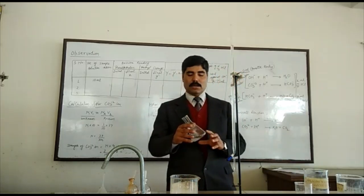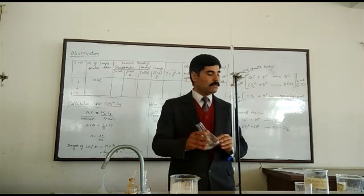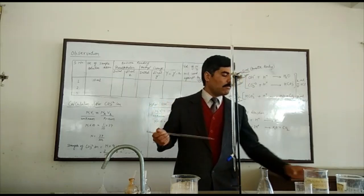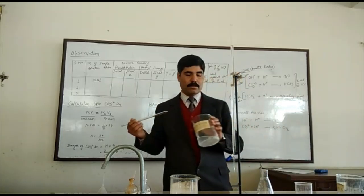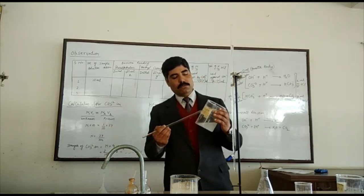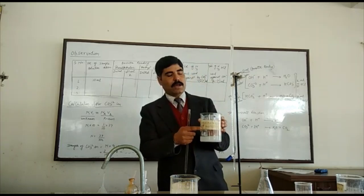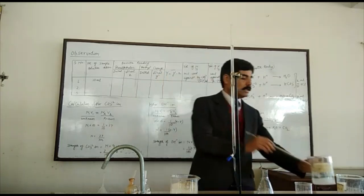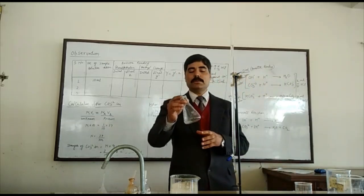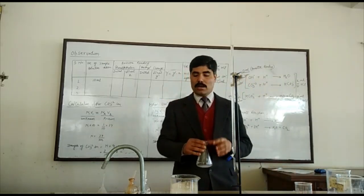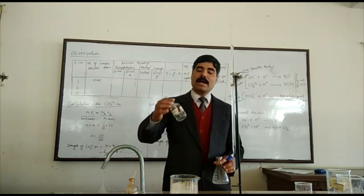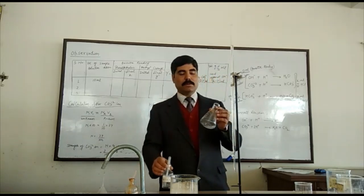Now we have to take the unknown sample solution into a conical flask with the help of a pipette. This is the pipette and we take 10 ml of the given sample solution — that is the alkaline water due to the presence of hydroxyl and carbonate ions — into the conical flask. We already have 10 ml of the unknown sample solution in our conical flask. Now before starting titration we have to add the indicator.